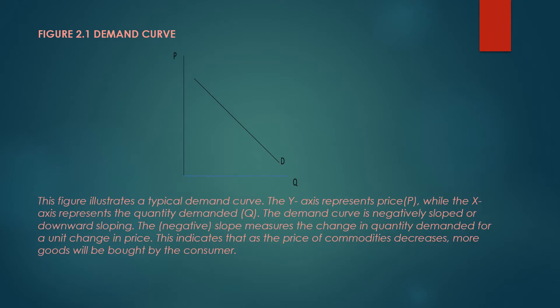This figure illustrates a typical demand curve. The y-axis represents the price, P, while the x-axis represents the quantity demanded, Q. The demand curve is negatively sloped or downward sloping. The negative slope measures the change in quantity demanded for a unit change in price, indicating that as the price of commodities decreases, more goods will be bought.